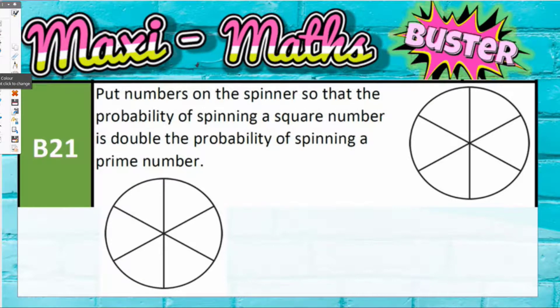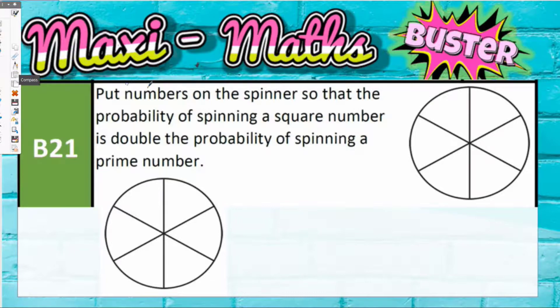Question 21: put numbers on the spinner so that the probability of spinning a square number is double the probability of spinning a prime number. There are lots of answers to this.